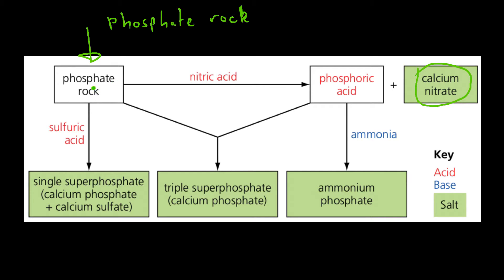Now, phosphate rock plus phosphoric acid, so going this way and this way, produces triple superphosphate. Triple superphosphate, which is calcium phosphate, it's one of the important salts that we need. Phosphate rock plus sulfuric acid produces single superphosphate, which is calcium phosphate and calcium sulfate. So that is great as well, that's another one of the salts, or mixture of the salts that we need.